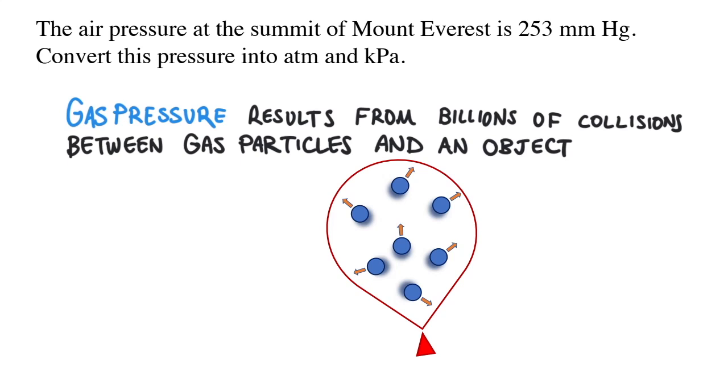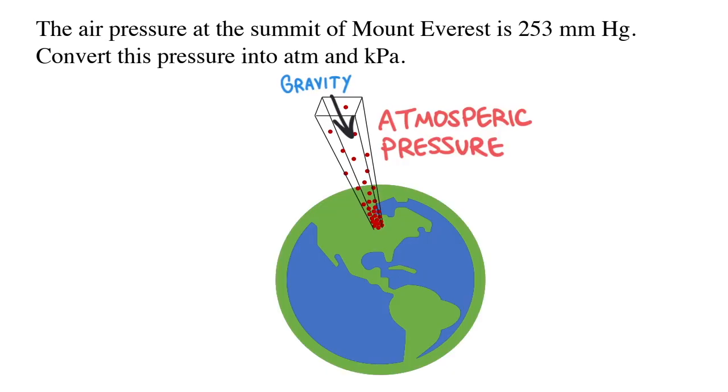Gas pressure is the result of billions of rapidly moving gas particles simultaneously colliding with an object. Air exerts pressure on Earth because gravity holds the gas particles in air within Earth's atmosphere. This is called atmospheric pressure.